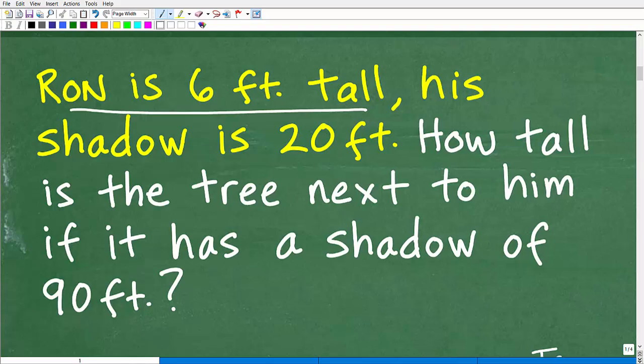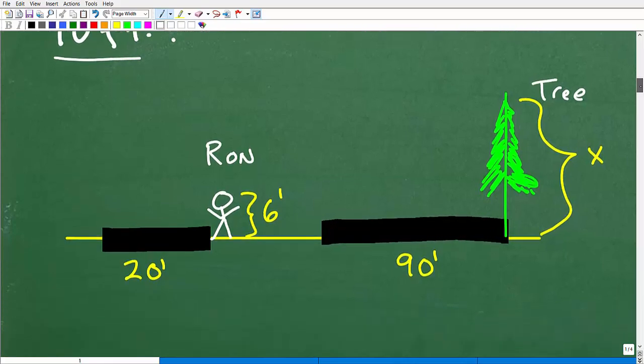So Ron is 6 feet tall. We want to draw a little stick figure of Ron and his height and his shadow. And then of course we have a tree and the tree's shadow. So we can put this in one little picture. Let's go ahead and take a look at the problem this way.